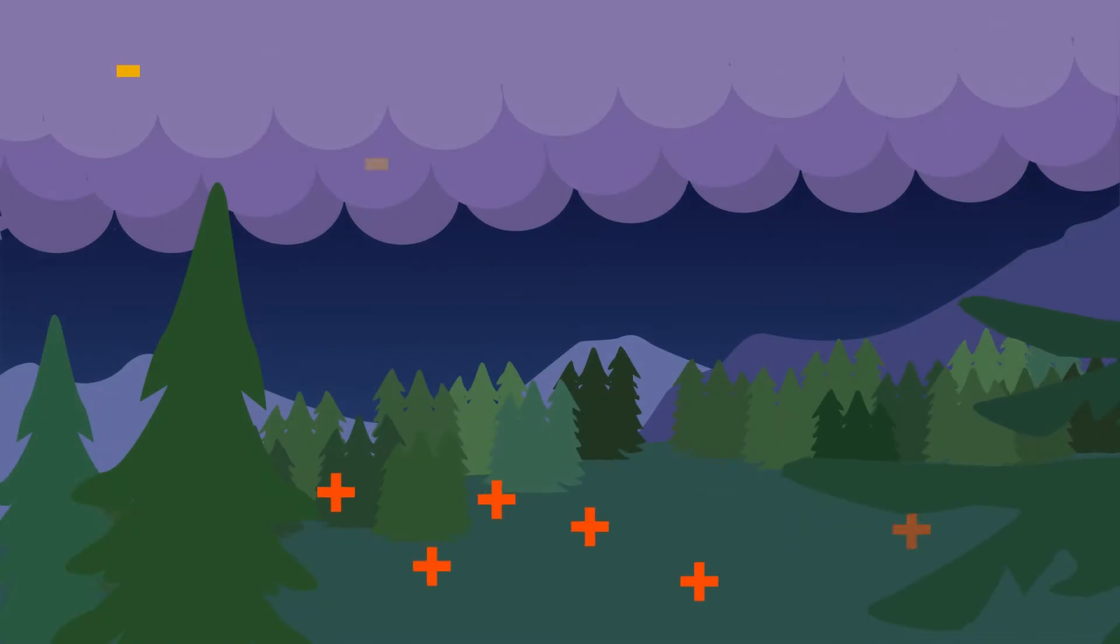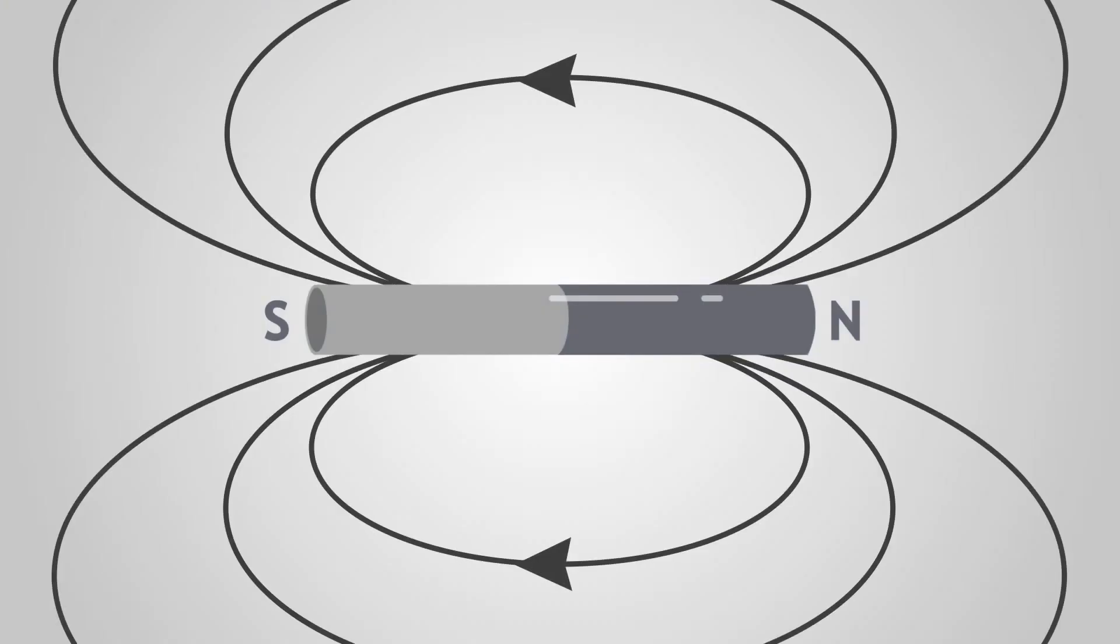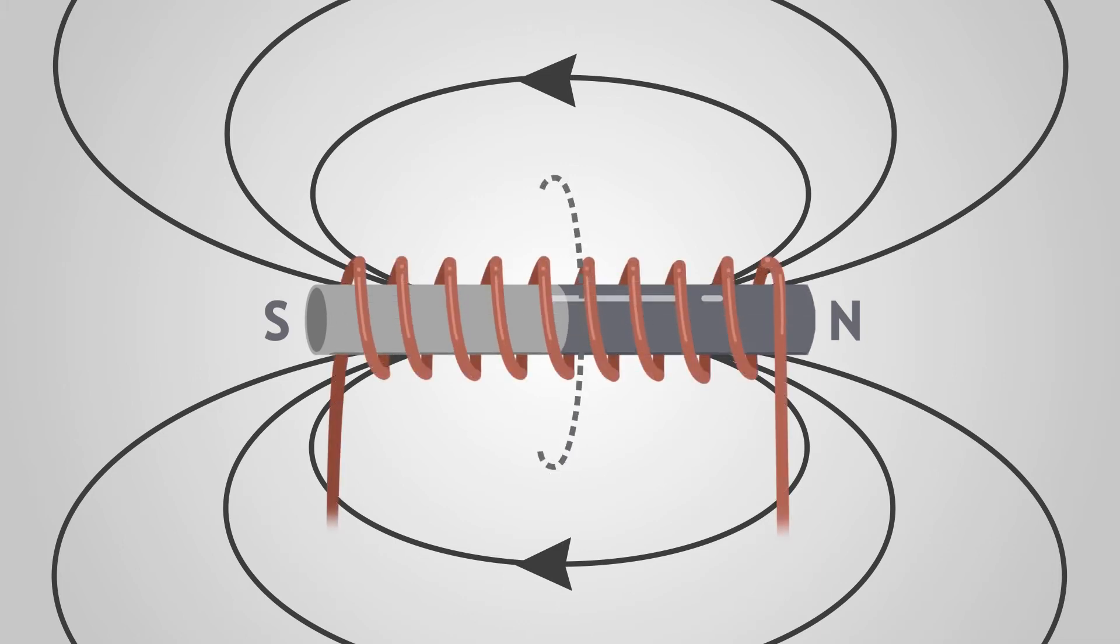Electrons seek to balance the charges around them. As charges build up, they can even leap from atom to atom through different materials to even out positive and negative charges. Electrons also respond to magnetic fields and vice versa. Scientists discovered that by spinning a magnet inside the coil of a wire, they were able to push electrons through the metal in a steady stream.